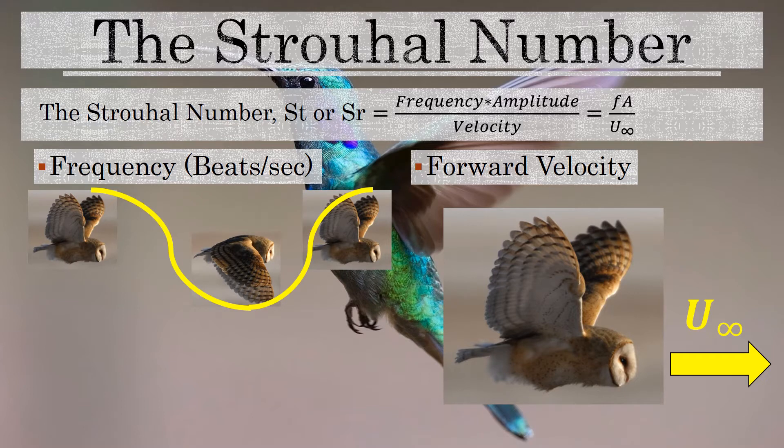The equation for the Strouhal number is the frequency times the amplitude over the velocity. The frequency and amplitude represent the inertial forces due to the local acceleration of the flow, and the velocity represents the inertial forces due to the convection of the flow or body. The Strouhal number is sometimes written as St and sometimes as Sr.